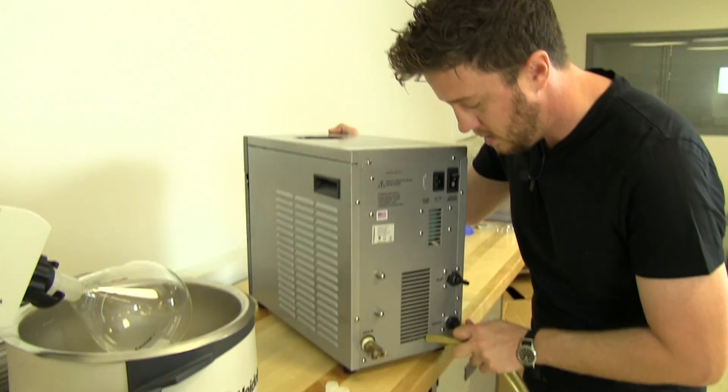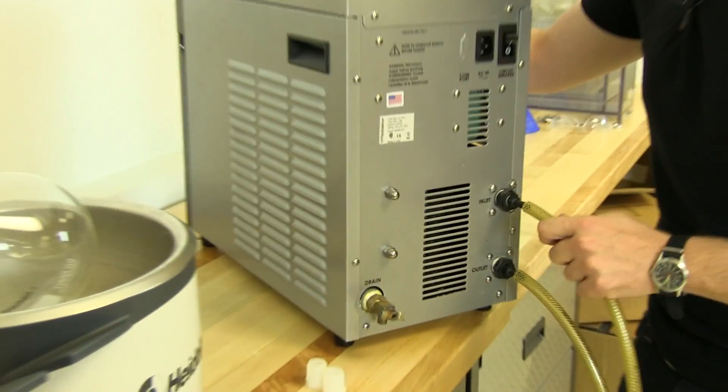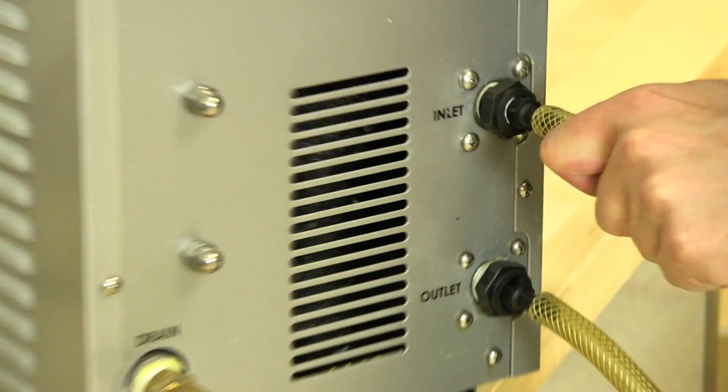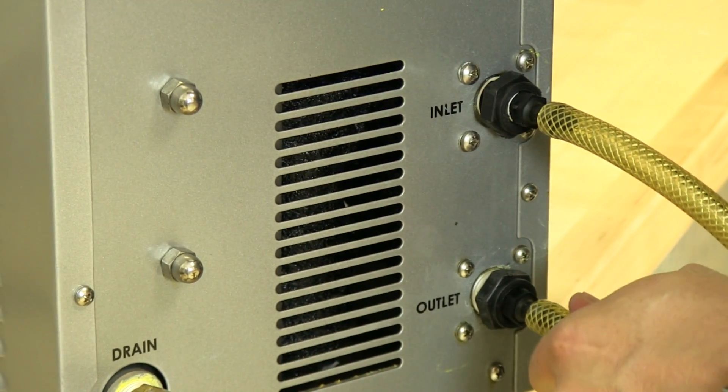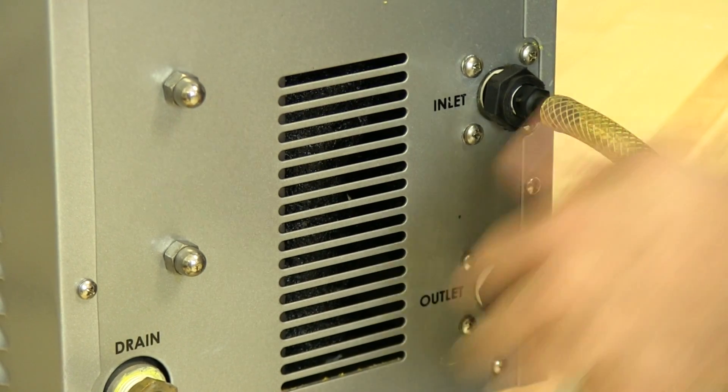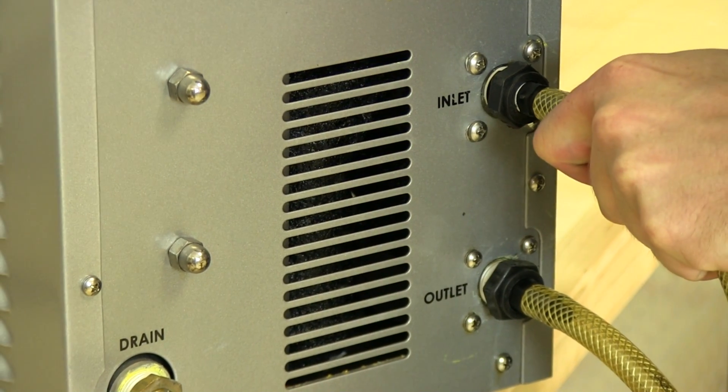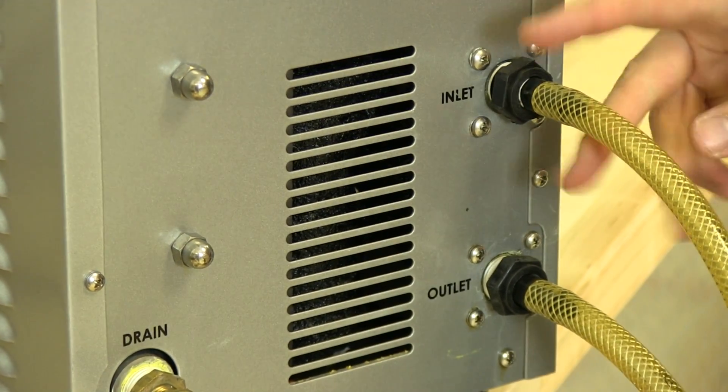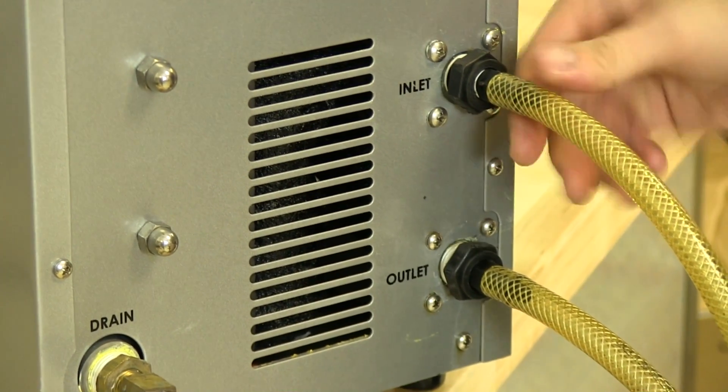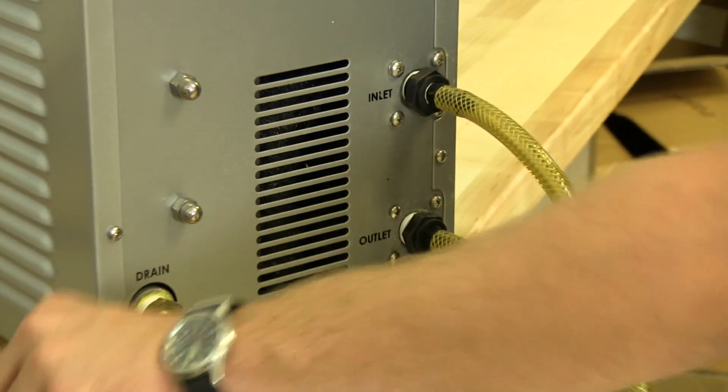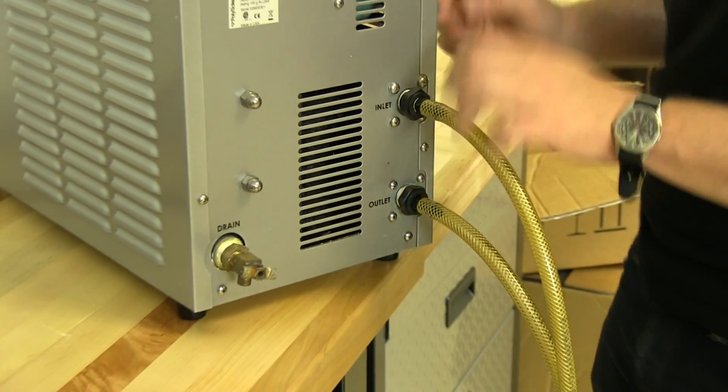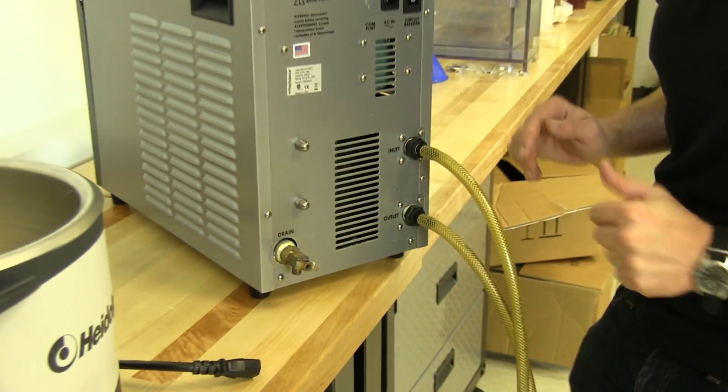So we slide them on, getting them all the way on. Again, you can have hose clamps that you connect here and tighten, but it's not always necessary. This should be an adequate seal.